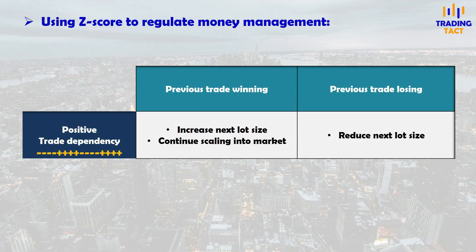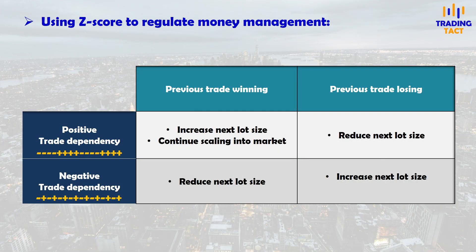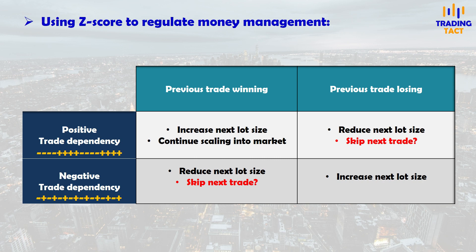Conversely, if you've just had a loss, you can reduce your lot size. The opposite applies for negative trade dependencies, where you expect your wins and losses to alternate. You can even consider skipping the next trade. For negative dependencies, you can apply an entry filter, whereby you only trade when the previous trade was a loser.